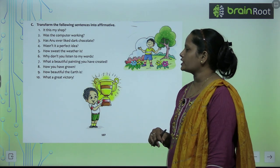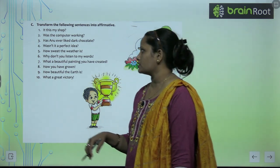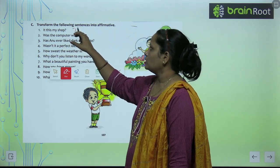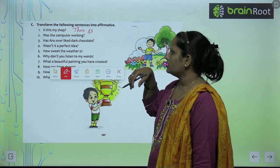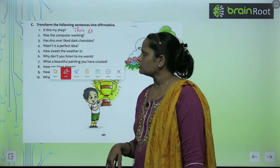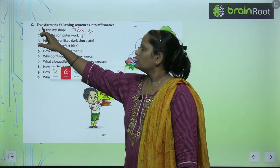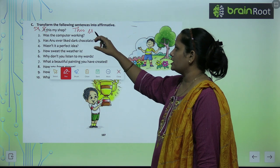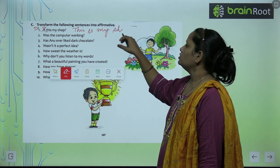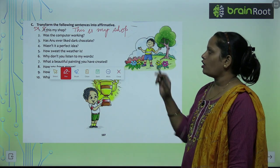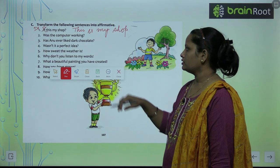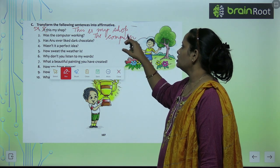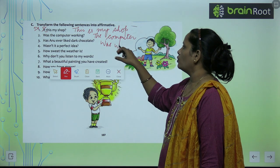Next is: transform the following sentences into affirmative, means positive sentence. The sentence is 'Is this my shop?' — sentence banega 'This is my shop.' And 'Was the computer working?' — the answer is 'The computer was working.' So like this, you have to change the rest of the questions that are given here.